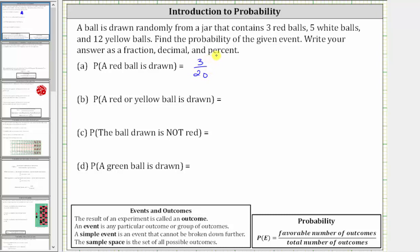There are a total of three favorable outcomes out of a total of 20 outcomes. This fraction doesn't simplify, and therefore we divide three by 20 to express the probability as a decimal. Three divided by 20 is equal to 0.15, which is equal to 15%.